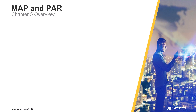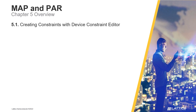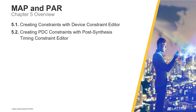Chapter 5 consists of seven sections. In the first section, Creating Constraints with Device Constraint Editor, we will introduce Radiant's Device Constraint Editor and how it can be used to create physical constraints for a project's device. In section 2, Creating PTC Constraints with Post-Synthesis Timing Constraint Editor, Radiant's Post-Synthesis Timing Constraint Editor is introduced and how it can be used to create timing constraints after synthesis. In section 3, Using Physical Designer, we will discuss Radiant's Physical Designer and what it can be used for.